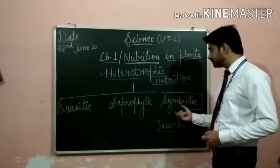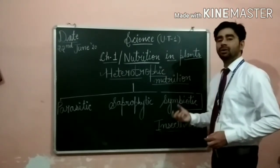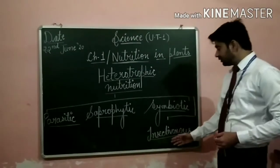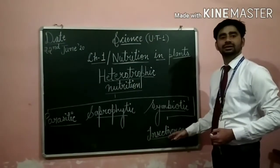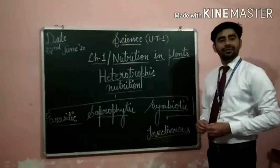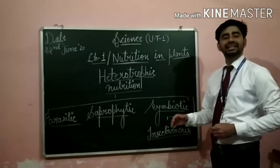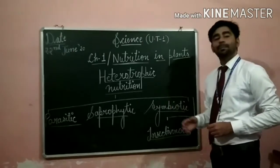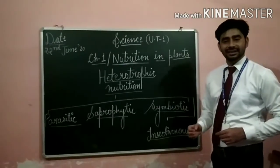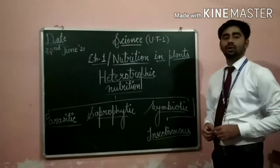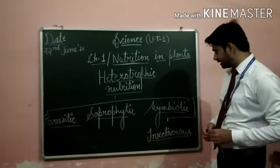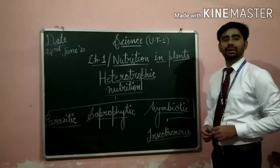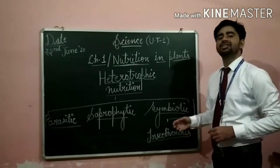Our last mode of nutrition is insectivorous nutrition. Have you ever heard about meat-eating plants? Yes, because some plants eat other small insects or animals. So they are called carnivorous plants or insectivorous plants. For example, venus flytrap and pitcher plants.